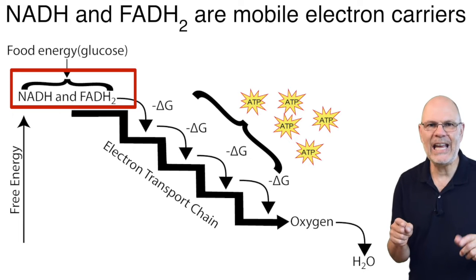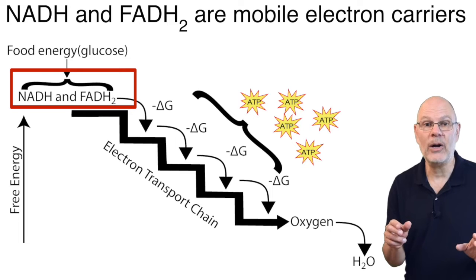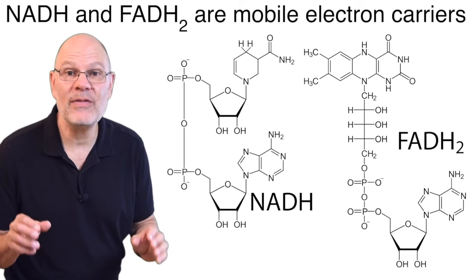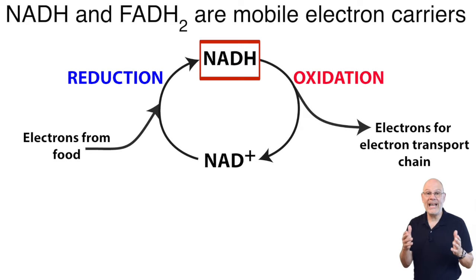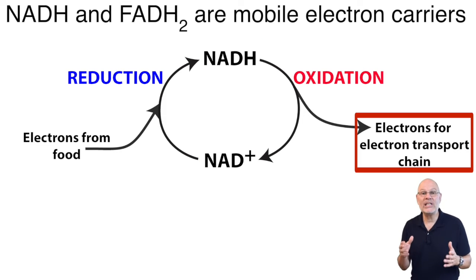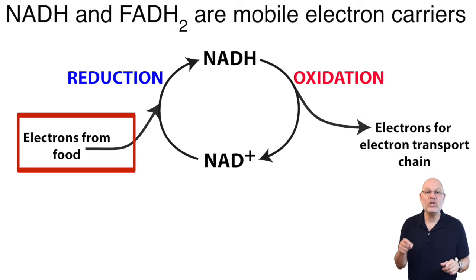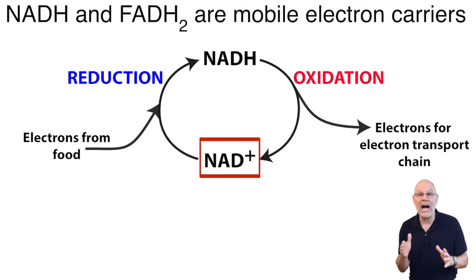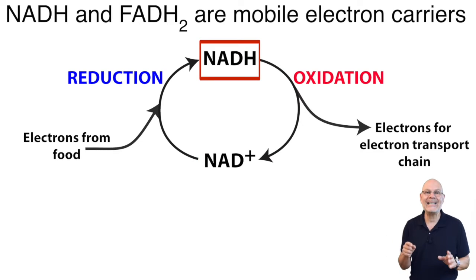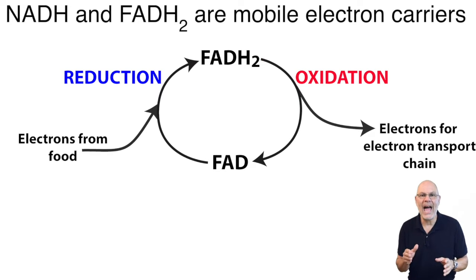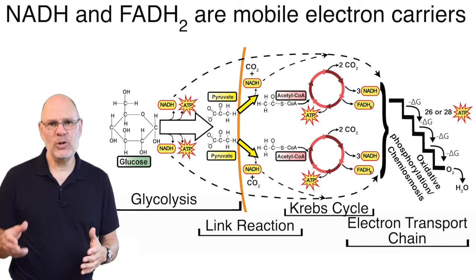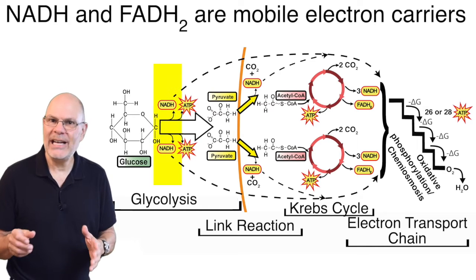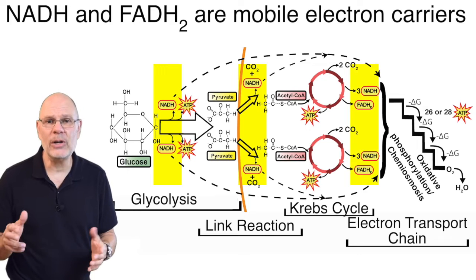These two molecules, NADH and FADH2, are called mobile electron carriers. Both, like ATP, are classified as nucleotides, but instead of trading off phosphate groups, they trade electrons and hydrogens. NADH is the reduced form — it can be oxidized to its counterpart NAD+, and that supplies energy to drive the electron transport chain. Using energy from food, NAD+, the low-energy oxidized form, can be chemically reduced back to NADH, the high-energy form. Pretty much the same thing happens with FADH2. In three places in cellular respiration, enzymes take electrons from food and use them to reduce these mobile electron carriers: in glycolysis, in the link reaction, and in the Krebs cycle.